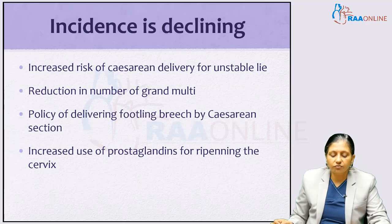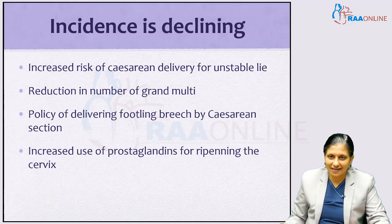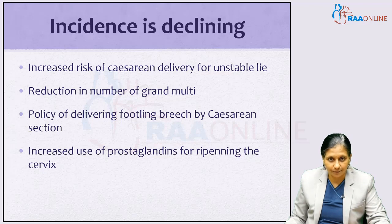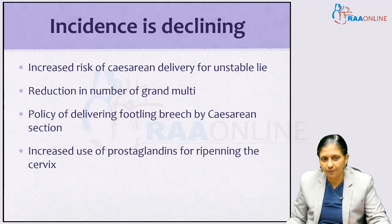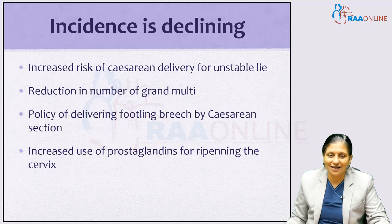The incidence of cord prolapse is declining these days because of the increased use of caesarean section for unstable lie, reduction in the number of grand multis, policy of delivering the footling breech by caesarean section instead of normal delivery, and the increased use of prostaglandins for ripening the cervix.